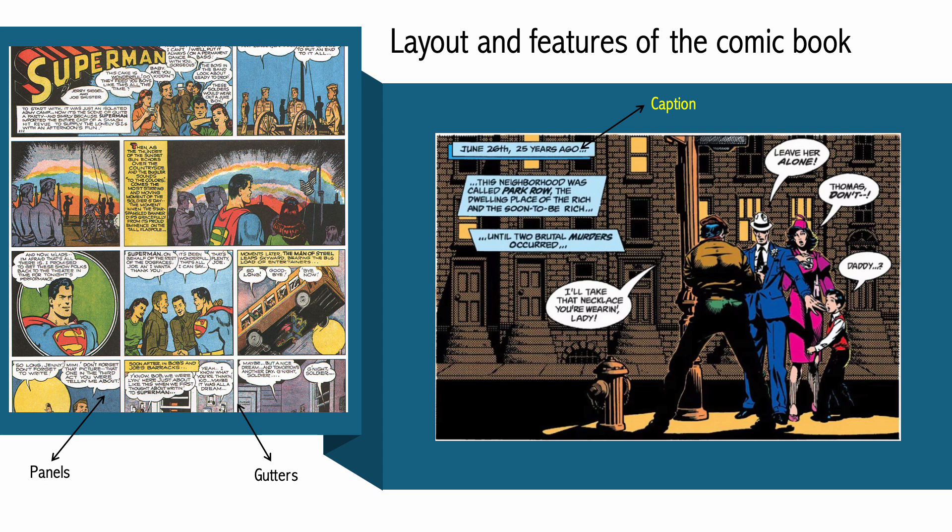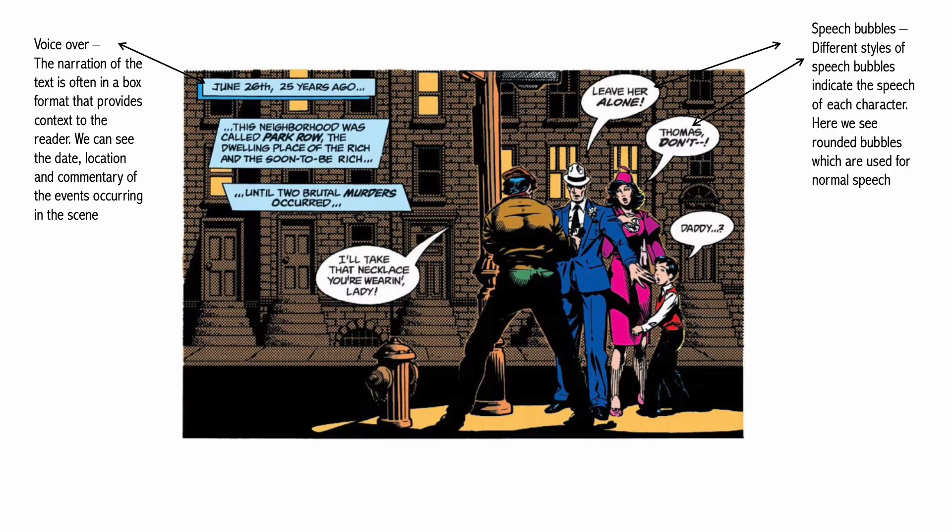The spaces between each panel are called gutters, as described by MacLeod S. in Understanding Comics from 1993. The gutters between each panel allow the reader to pace the story and use their imagination to fill in the gaps between these transitions. The sizing of the gutter represents time passing — if the gutter is wider, more time has passed between each panel. You can see the caption in this image in the blue squares that give detail about the time, location, and events that are about to occur in the scene.